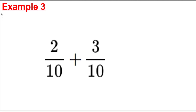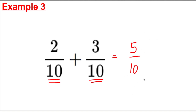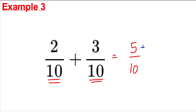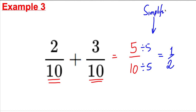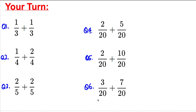Example 3 is very slightly different. We have two tenths plus three tenths. The numbers on the bottom are the same, so two tenths plus three tenths must be five tenths. That's the correct answer, but this fraction can be simplified. Does anything go into both 5 and 10? Yes — 5 does. So divide the top and bottom by 5, and it simplifies to one half. In the last step after adding, always ask yourself: can I simplify? If you can, make sure you do.